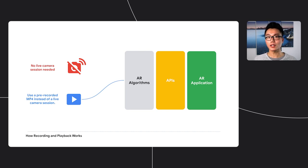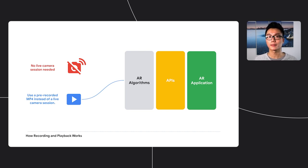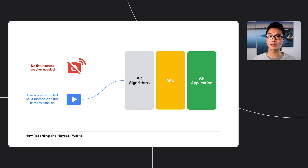Developers can then feed these recorded videos to ARCore via the playback API, which will treat the MP4 just like a live session feed. To be clear, you can still use a live camera session as you always have. But now, with this new API, your AR applications can opt to use a pre-recorded MP4 instead of that live session.